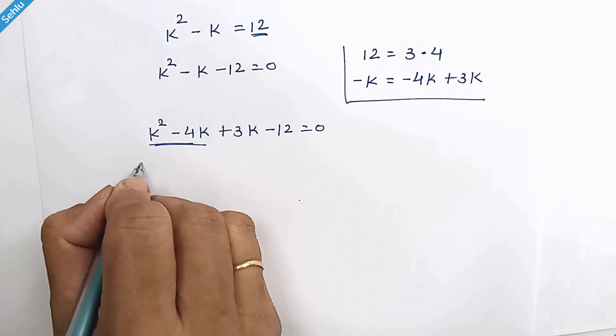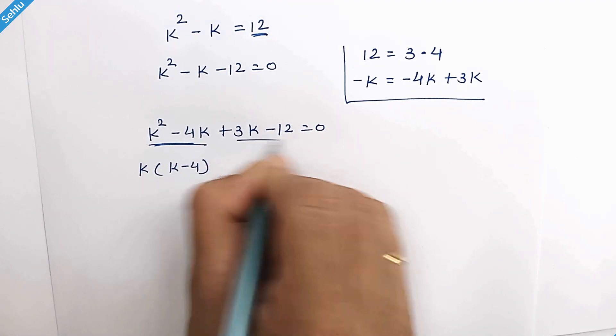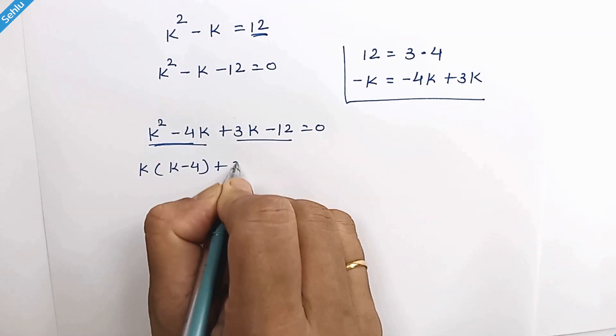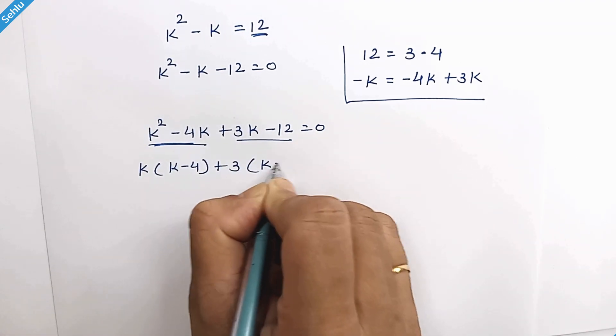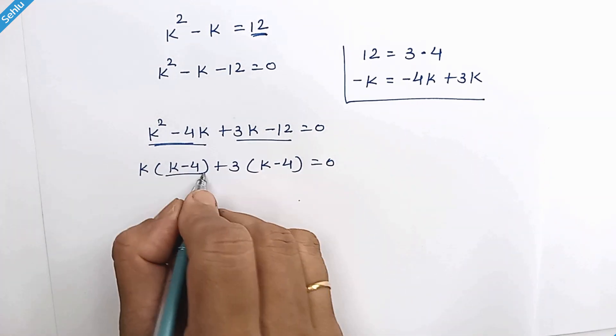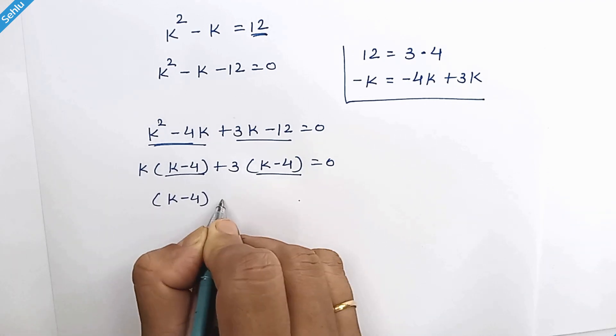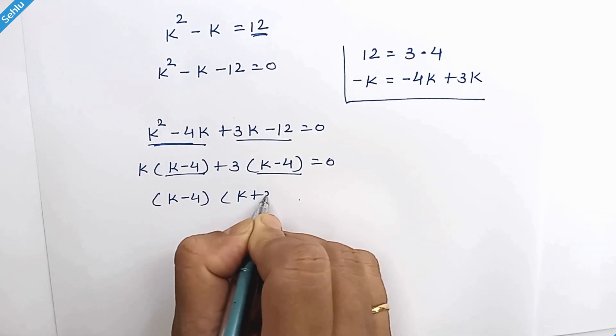We can factor out k from here and 3 from here. Taking k minus 4 common, so we have k plus 3 here.